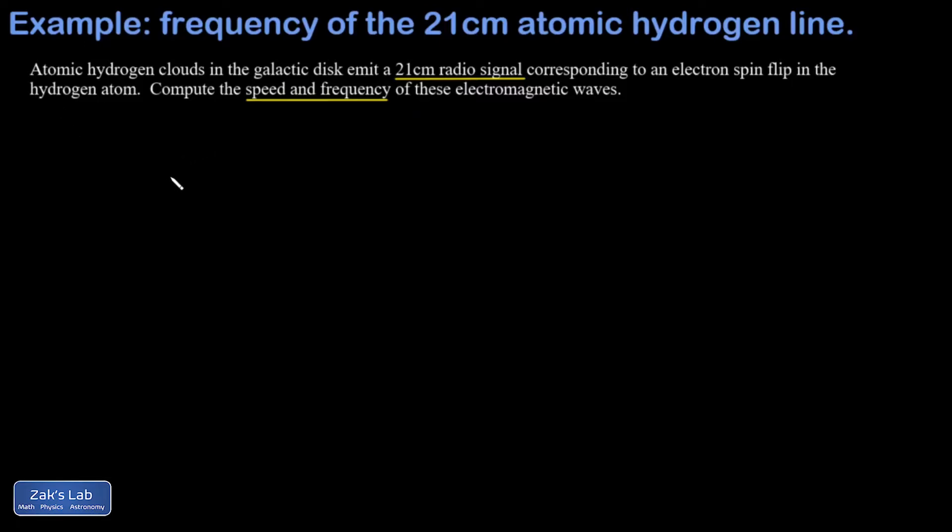Before I do anything, remember the speed of an electromagnetic wave is the speed of light, approximately 3×10^8 meters per second. Electromagnetic waves follow the same speed, frequency, and wavelength relation as waves on a string, and I'll post a link to the video where I first showed this.